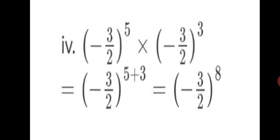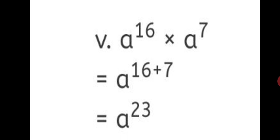Fourth sum: minus 3 upon 2, raised to the power of 5, into minus 3 upon 2, raised to the power of 3. Take minus 3 upon 2 common in bracket and add the index: 5 plus 3 is 8. Final answer: minus 3 upon 2, raised to the power of 8. Fifth sum: A raised to the power of 16 into A raised to the power of 7. Don't get confused even if it's a letter — only the base has to be same to apply the formula. Take A common and add the index: 16 plus 7 is 23. Final answer: A raised to the power of 23.